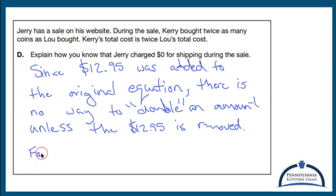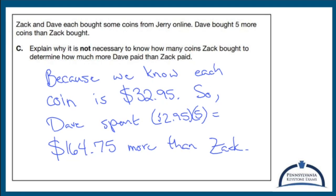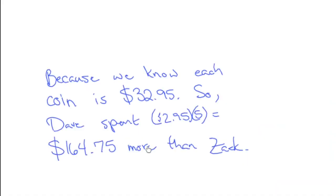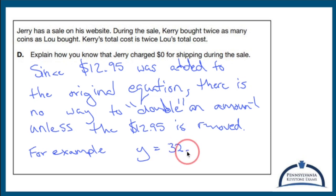For example, Y equals 32.95X. All right. So now if I were to say something like, one guy got five, one guy got 10. Now I can double it. And there is no shipping attached.